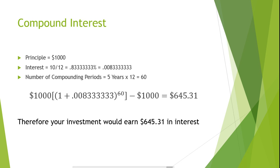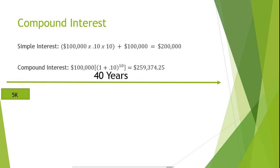Compound interest can greatly increase the amount of interest earned in an investment. If you were to invest $100,000 in an account that earned 10% simple interest compounded annually, your investment would be worth $200,000 in 10 years. However, if that same $100,000 earned 10% compound interest, your investment would be worth $259,374.25 — that's $59,374.25 more in interest. This significance only grows the longer the investment is held, since investments that earn compound interest grow exponentially.